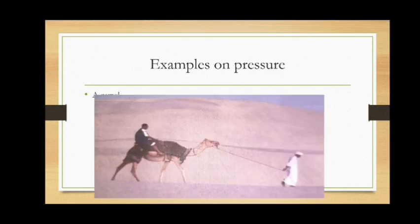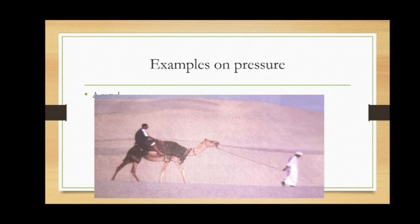A camel can easily cross the desert compared to a horse or donkey because the camel exerts very small pressure on the ground as it has very broad feet — broad feet means larger area, hence less pressure. For the same reason, an elephant can walk on any kind of ground because its foot area is very large, and hence the pressure on the ground is very small.